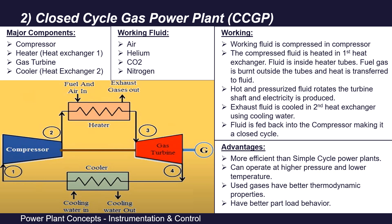The major components of a closed cycle gas power plant are a compressor, then a heater, then a gas turbine, and finally a cooler. The working fluid can be air, helium, carbon dioxide, or nitrogen. First, we compress this working fluid in the compressor. Then this compressed working fluid is passed through the heater tubes in a heat exchanger — the working fluid is inside the tubes, and outside the tubes a fuel-air mixture is burnt, producing heat that heats the compressed working fluid.